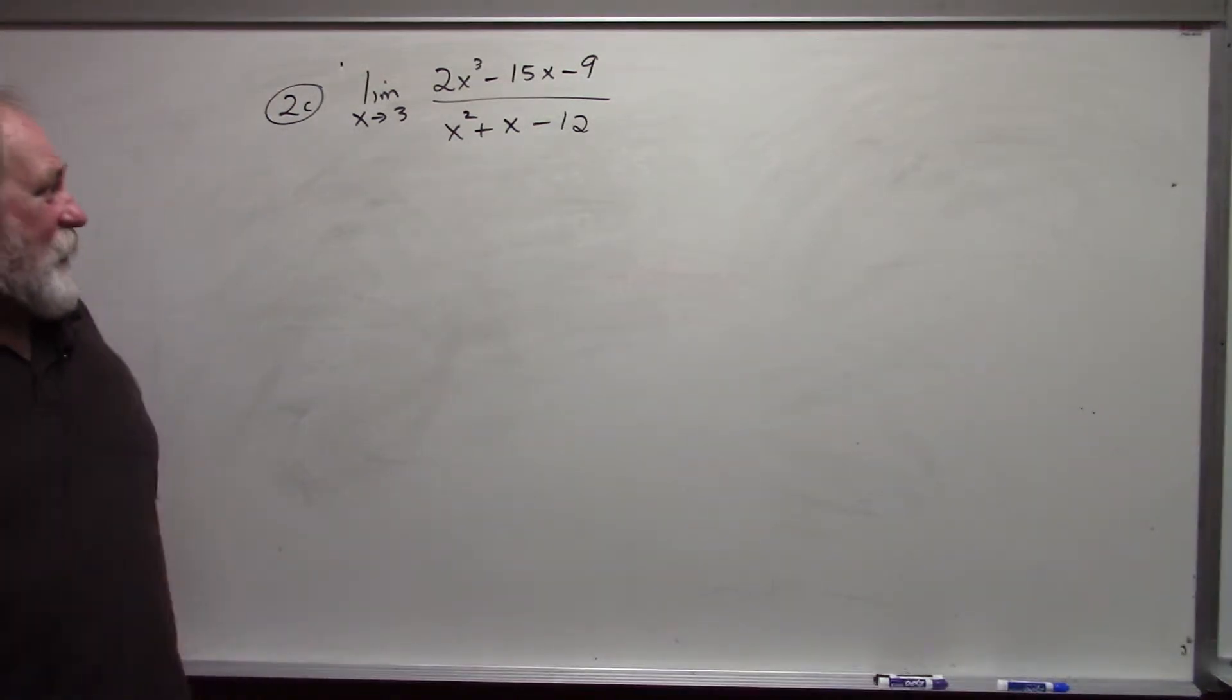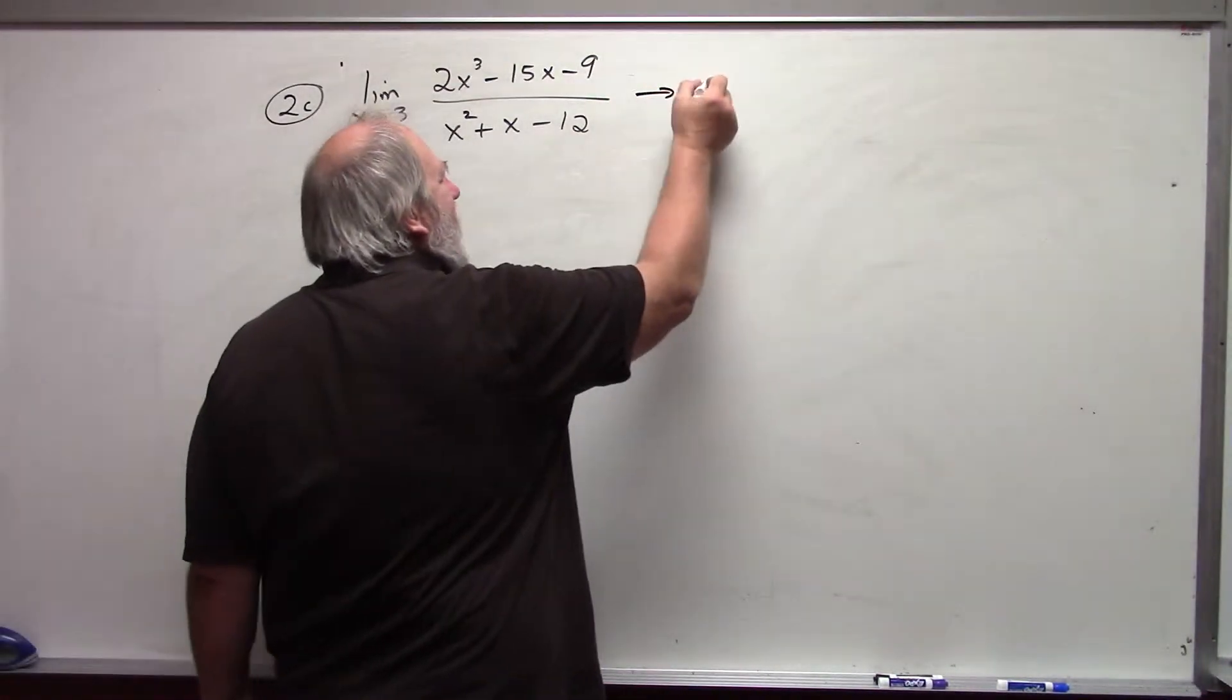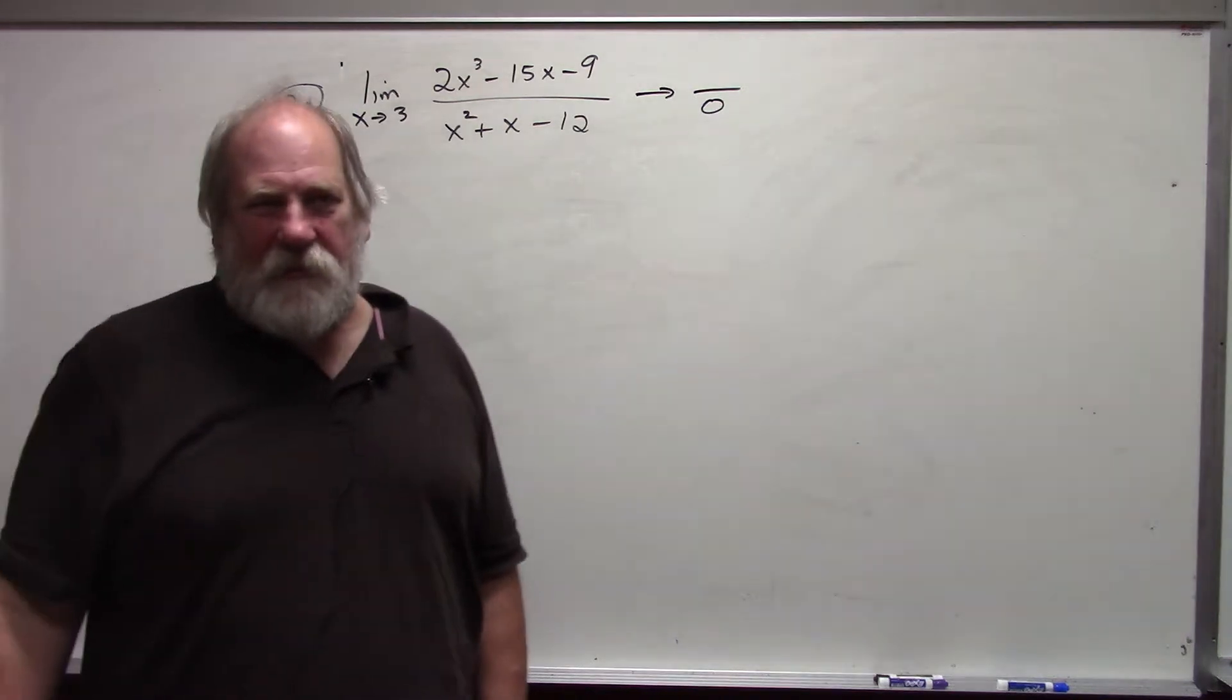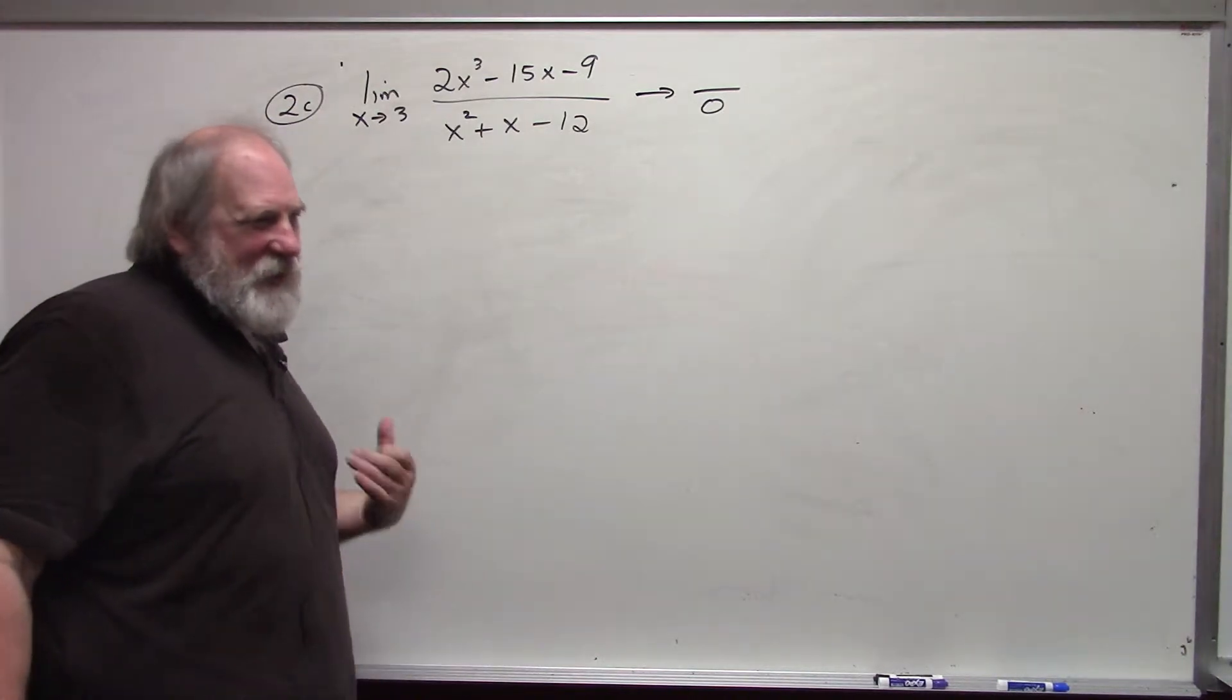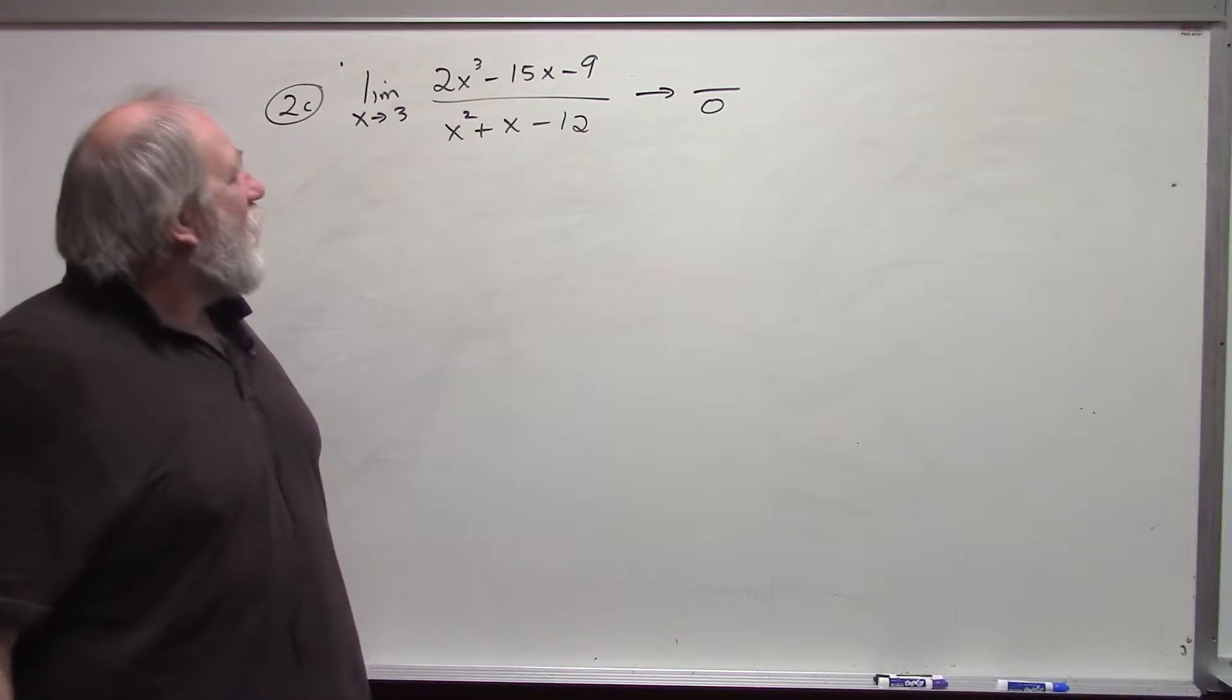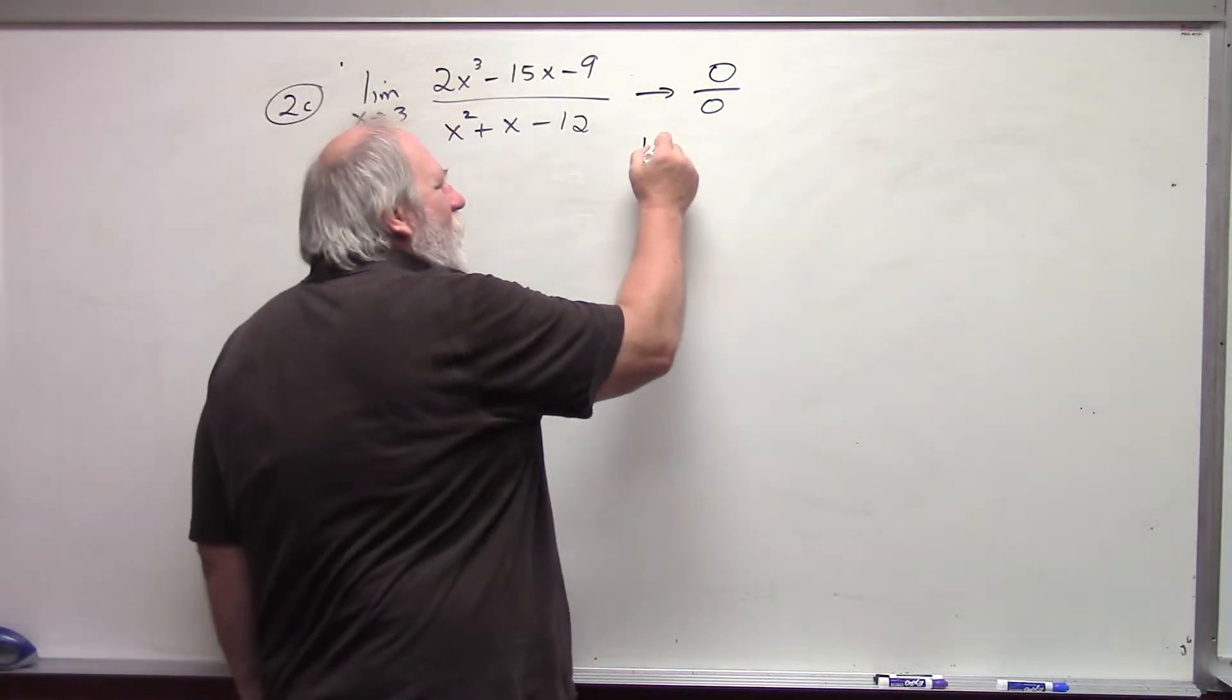In this situation, notice my denominator is approaching 0. That is bad. It means that we can't evaluate this limit directly. We will later deal with situations where the numerator does not approach 0. But in this particular situation, my numerator is also approaching 0. This is called an indeterminate form.